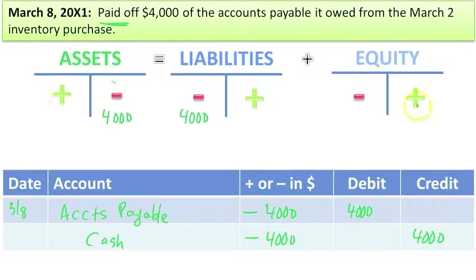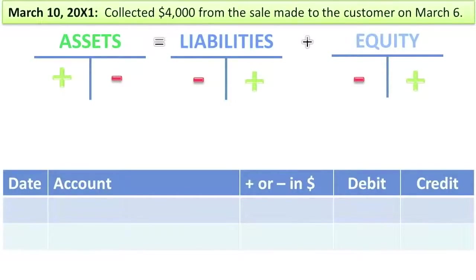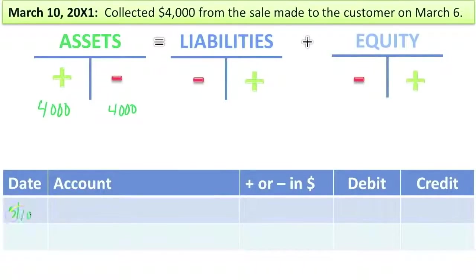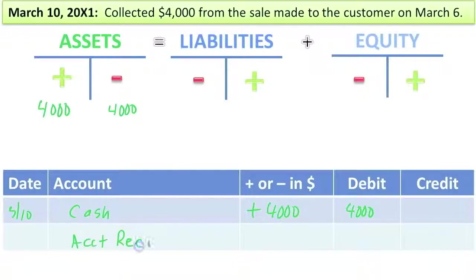Collected $4,000 from the sale made to the customer on March 6th. Be careful — we already recorded the sale, so do not record sales revenue again, otherwise you'd be double counting. We collected $4,000, so we got more asset called cash. And since the customer already owed us, we have an accounts receivable which we've now given up because we got paid — accounts receivable went down. Cash increased by $4,000: an increase in cash is a debit. Accounts receivable decreased by $4,000: reducing an asset is a credit.